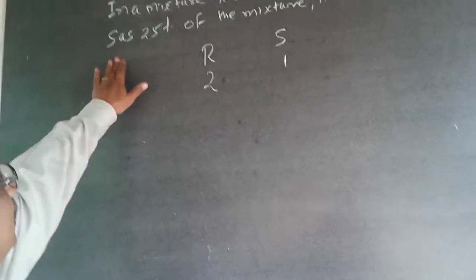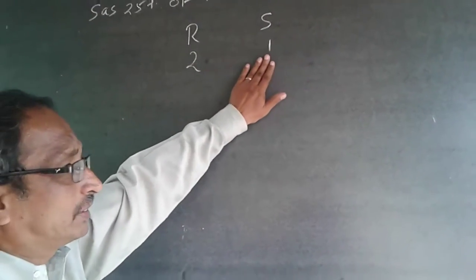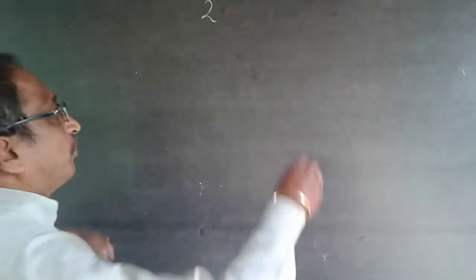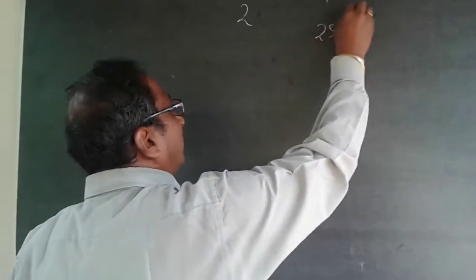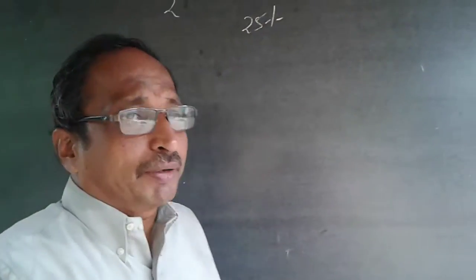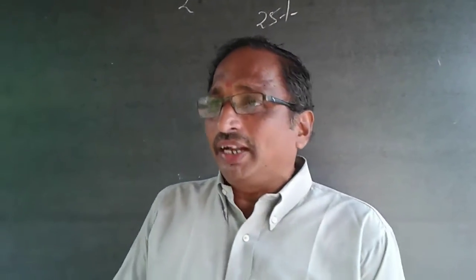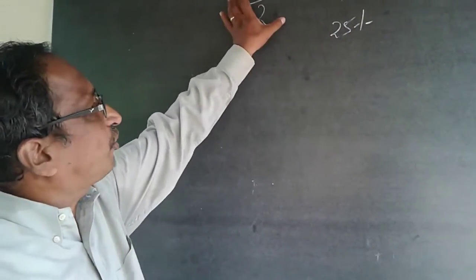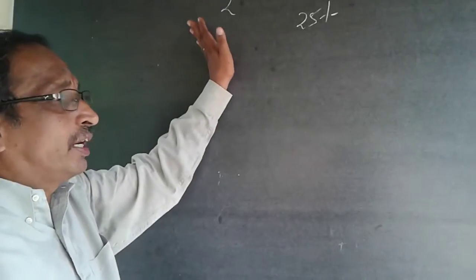But what quantity of S is there has to become 25%. If S has to become 25% in a mixture, then the compound is always 100% containing all the products inside it. So if this is 25%, R has to become 75%, because it can only be 100%.